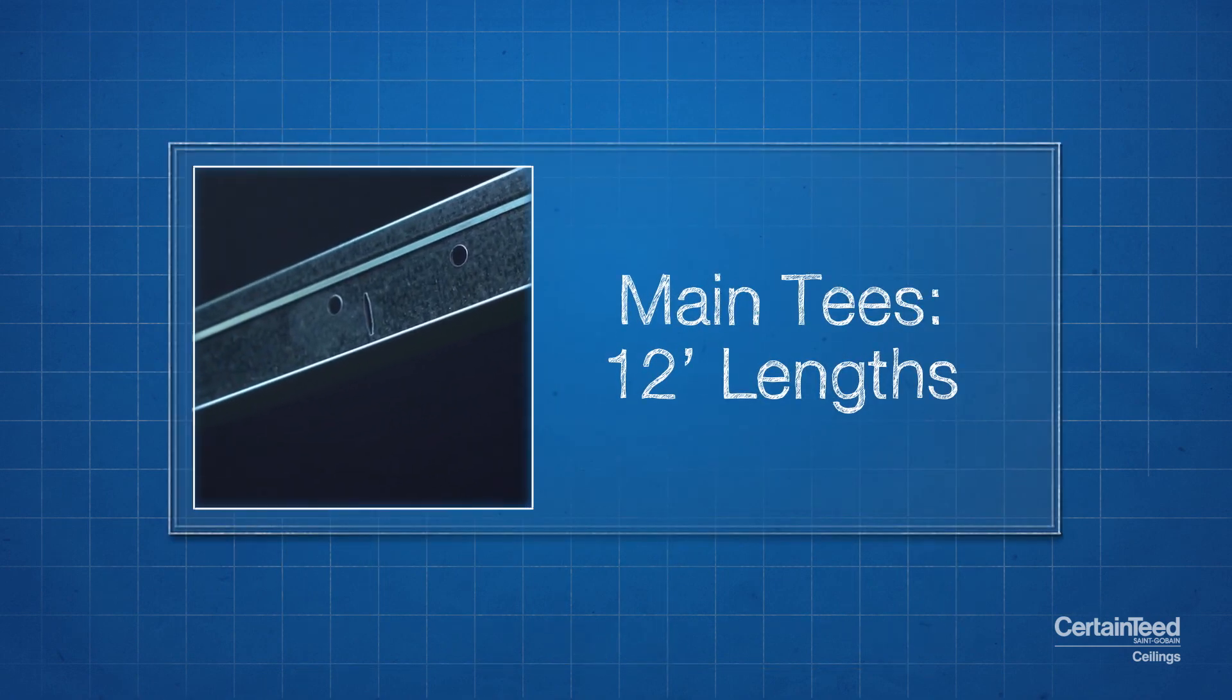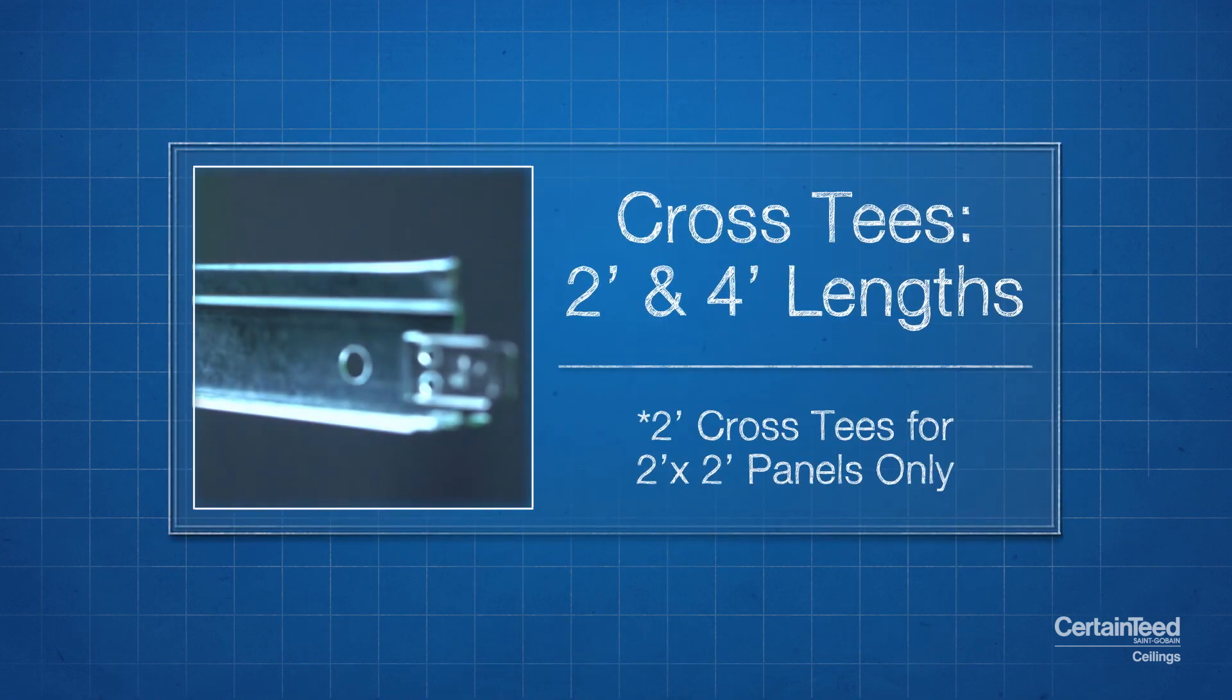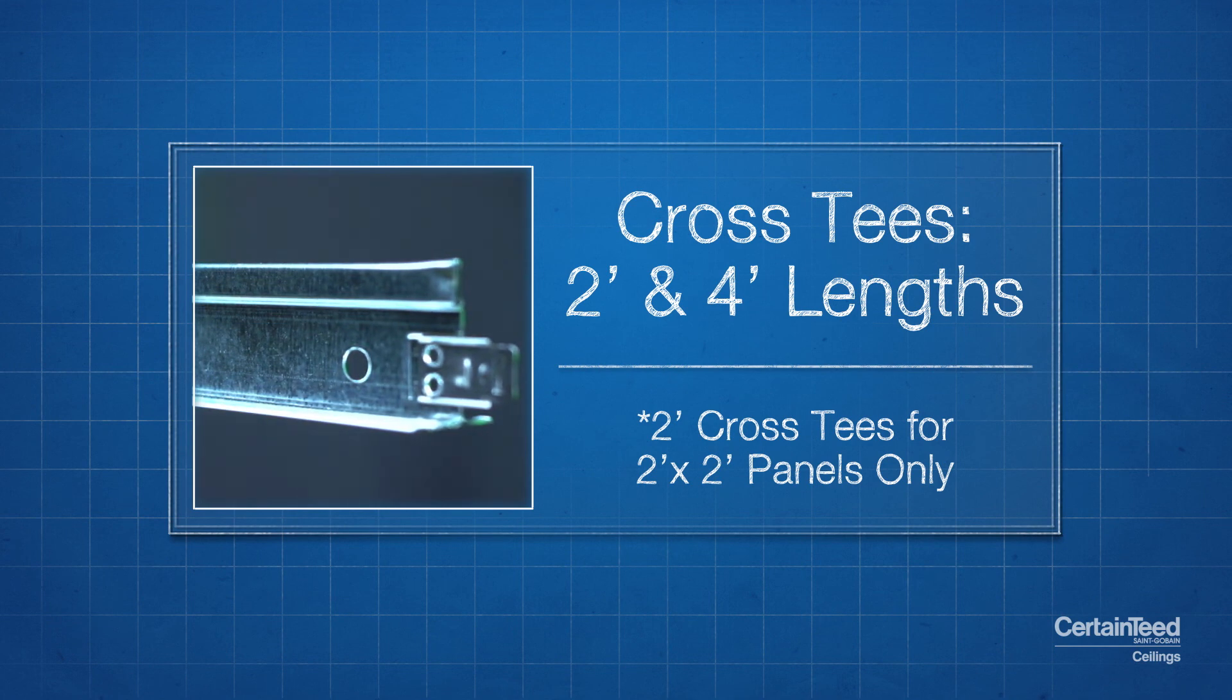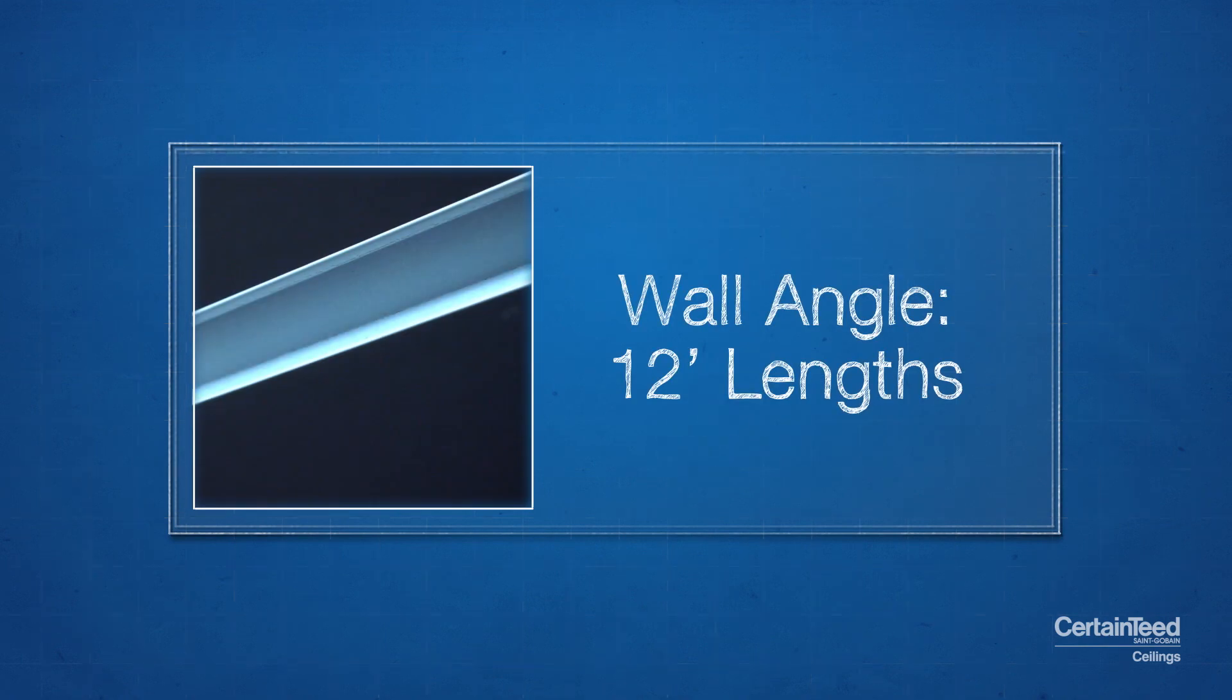Main tees come in 12 foot lengths. Cross tees come in 2 foot and 4 foot lengths. 2 foot cross tees are required to install 2 foot by 2 foot ceiling panels only. Wall angle comes in 12 foot lengths.